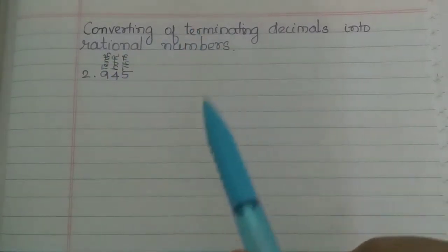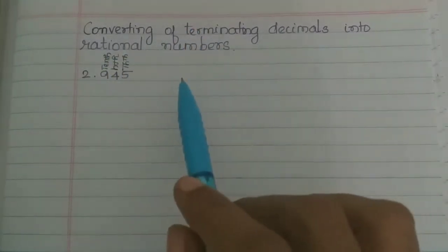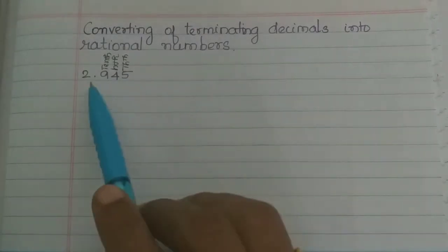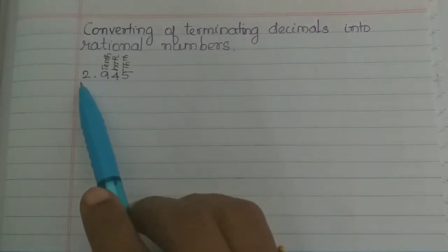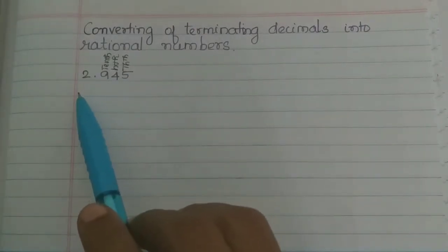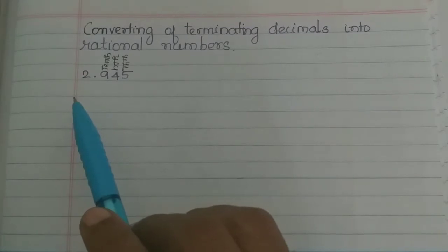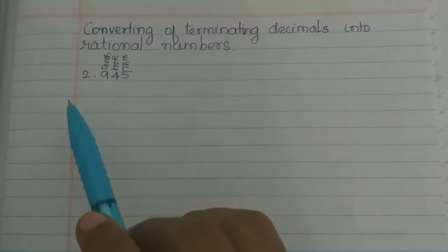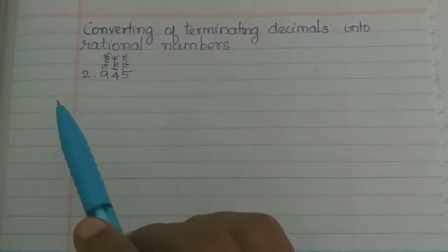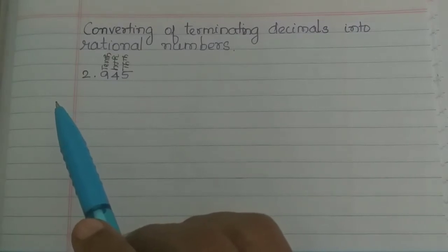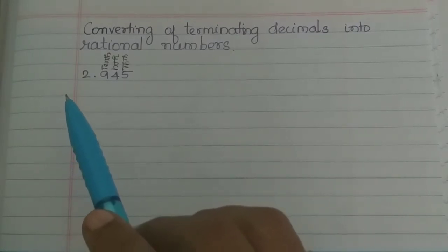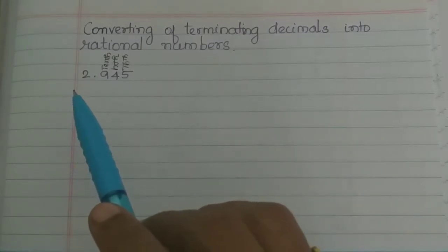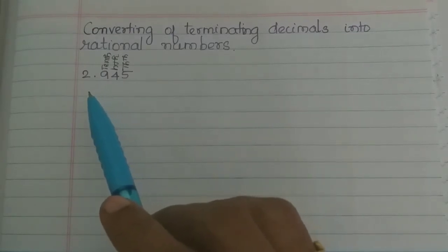So, how do we see that? But before that, you should know all the whole numbers. The whole numbers are 1 and more than 1 — those are whole numbers. So 1 is a whole number.